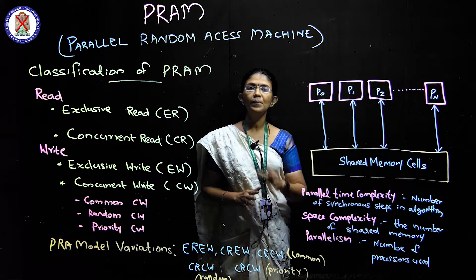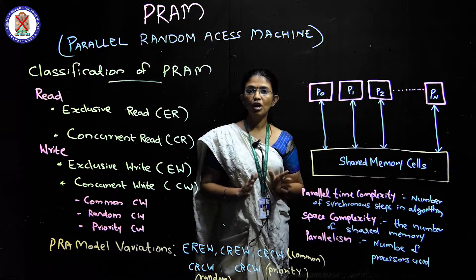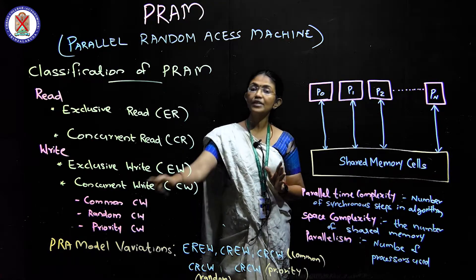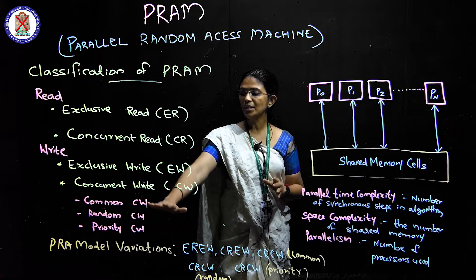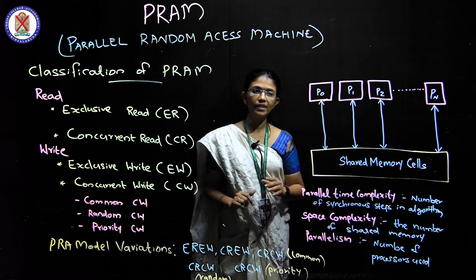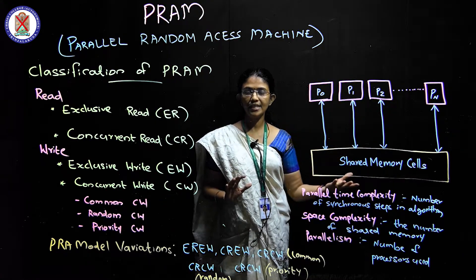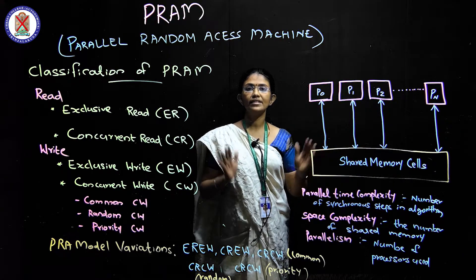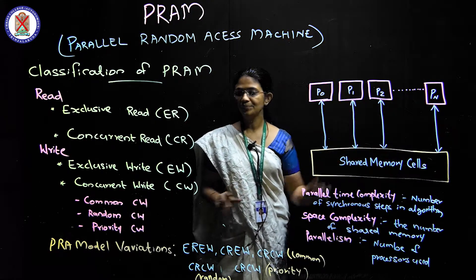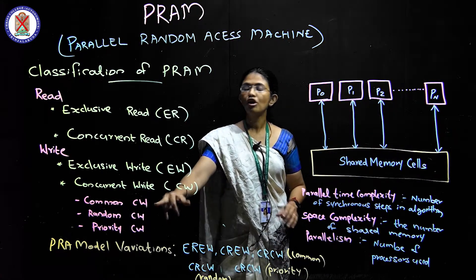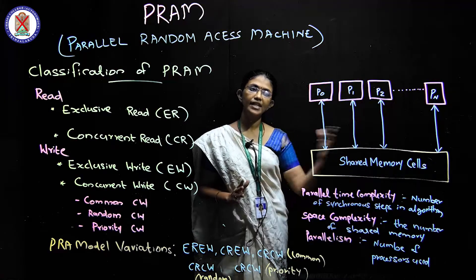In the concurrent write category, there are sub-types. The first is Common Concurrent Write — this means all processes write the same data to the same memory location. Common means all processes are writing the same data.